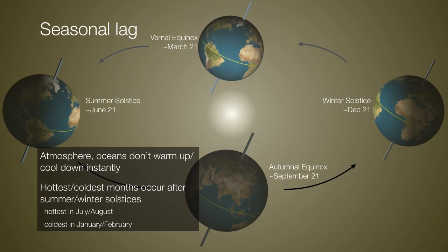Even though we experience the winter solstice on December 21st, it takes about a month and a half for most of that heat to escape the northern hemisphere, so we get the coldest days in February. Then as we reach the summer solstice, it still takes about another month and a half — until late July or early August — to really experience the warmest temperatures, because the ocean and atmosphere take that much time to heat up. Still, none of this would be true if we didn't have an axial tilt. So the axial tilt is always the reason for the season.